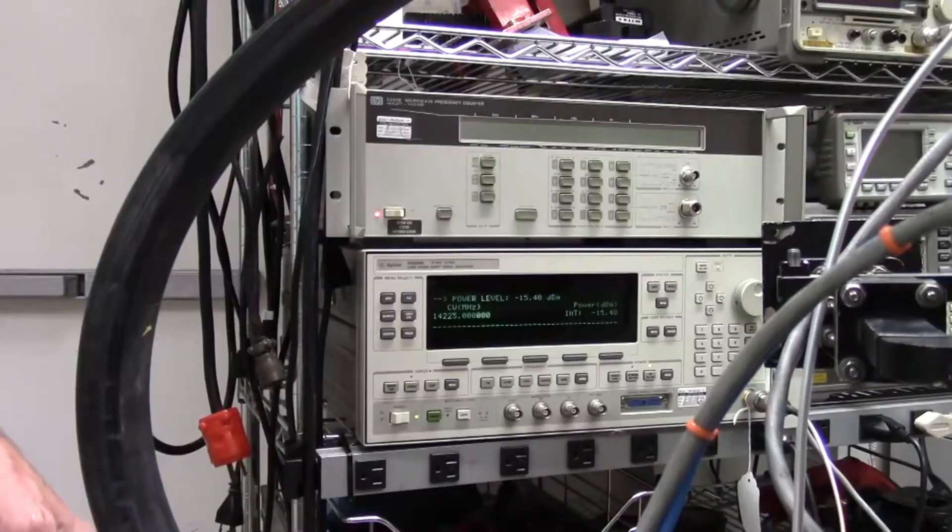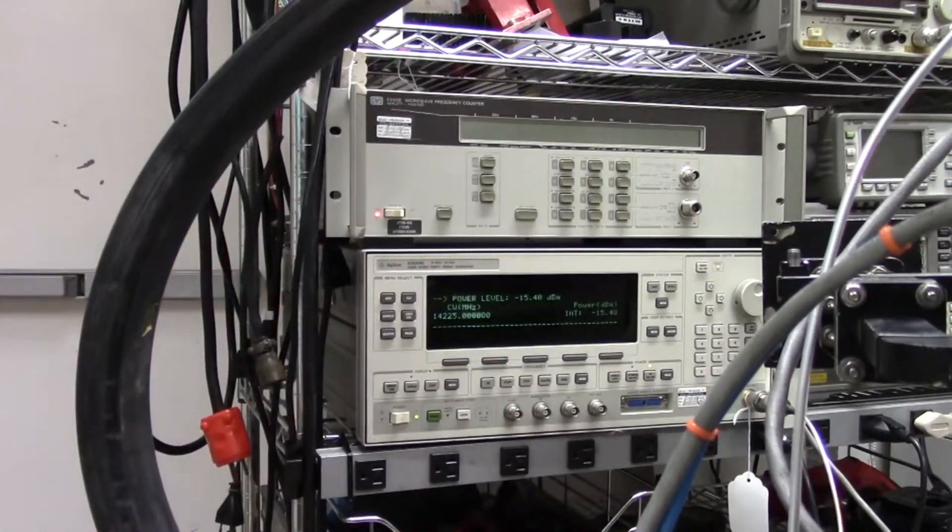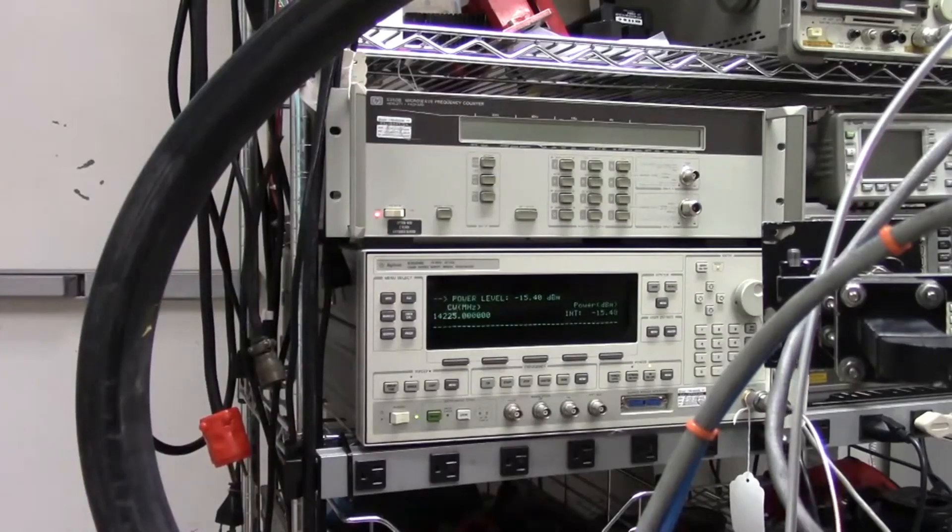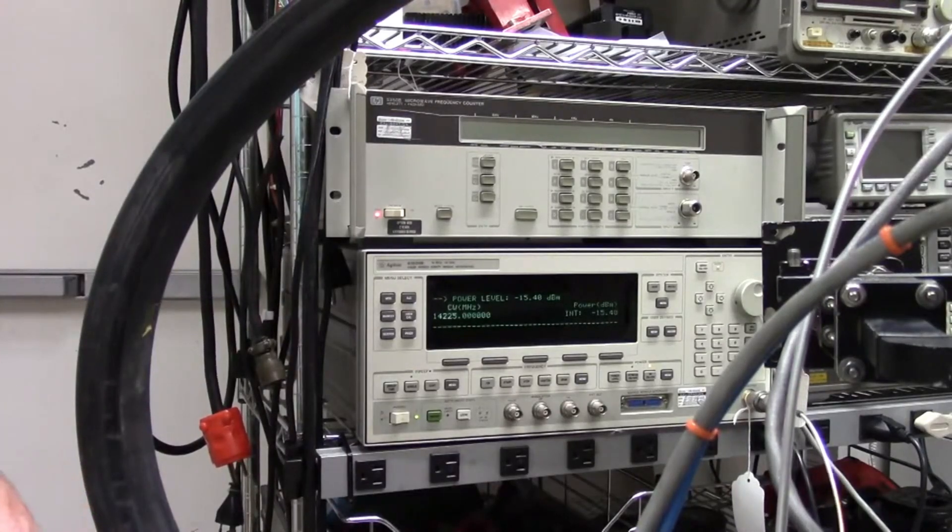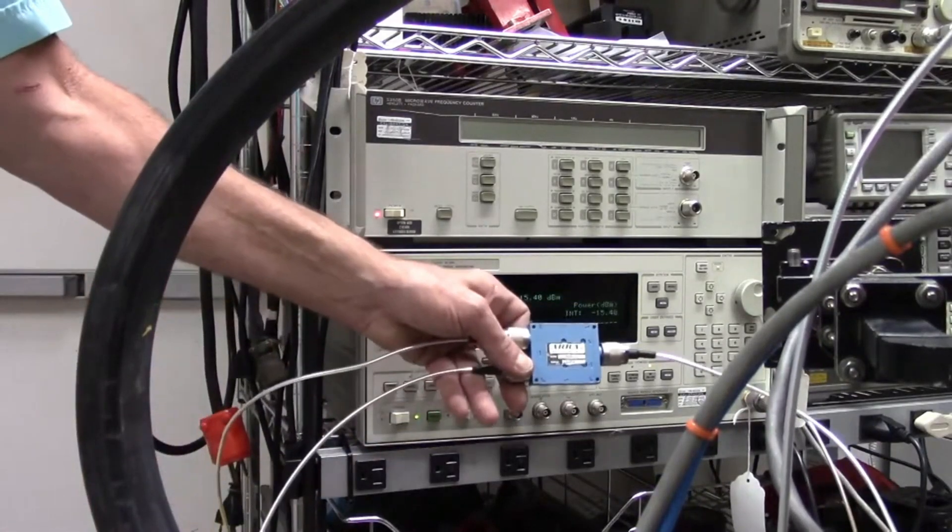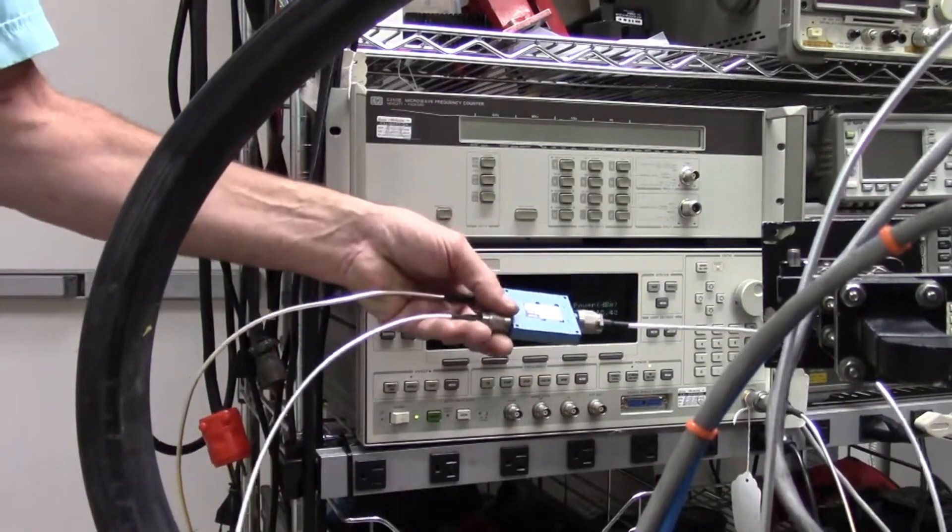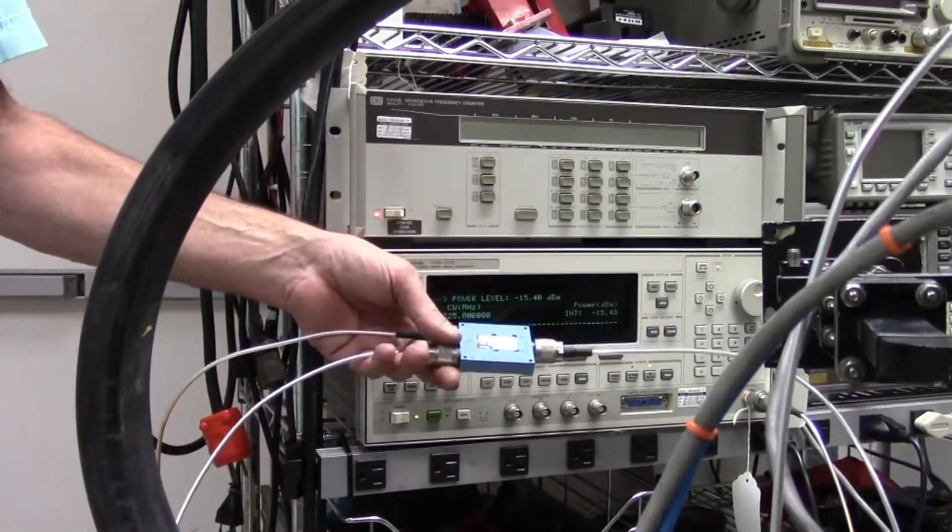As mentioned, this is our test setup here. So we're using a signal generator generating 14.25 gigahertz. That actually is going into a splitter and being split out into each of the TWT's input ports.